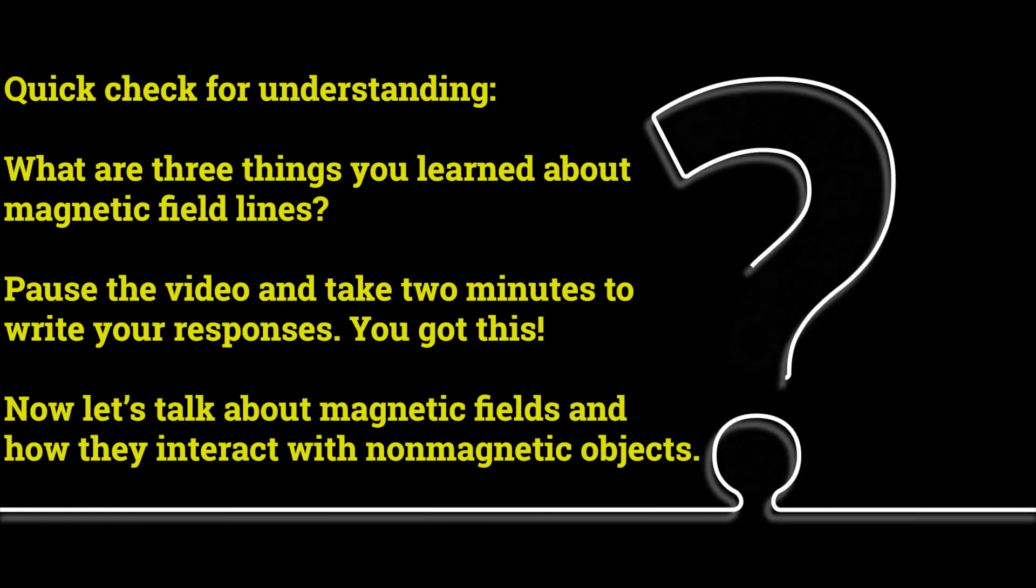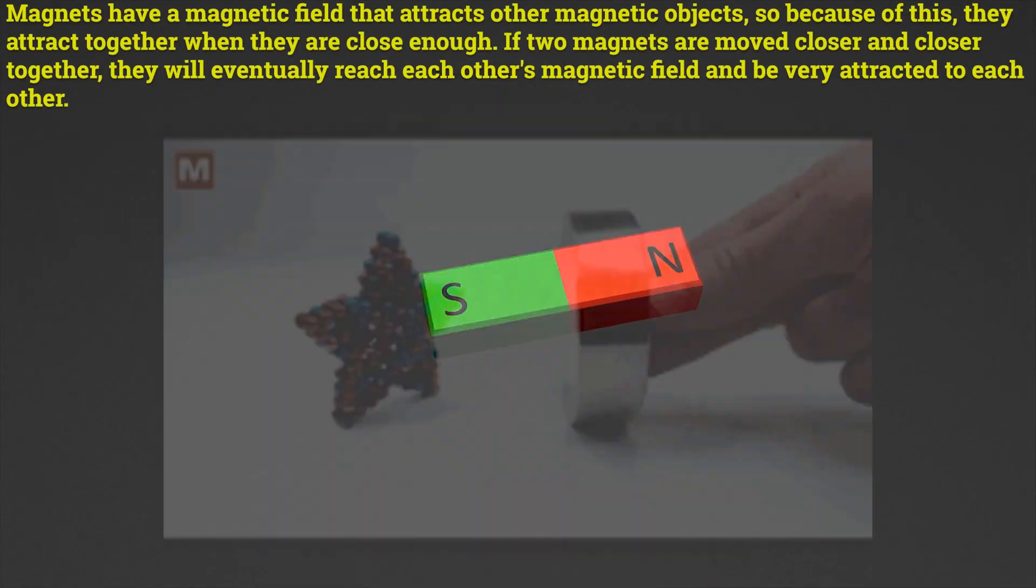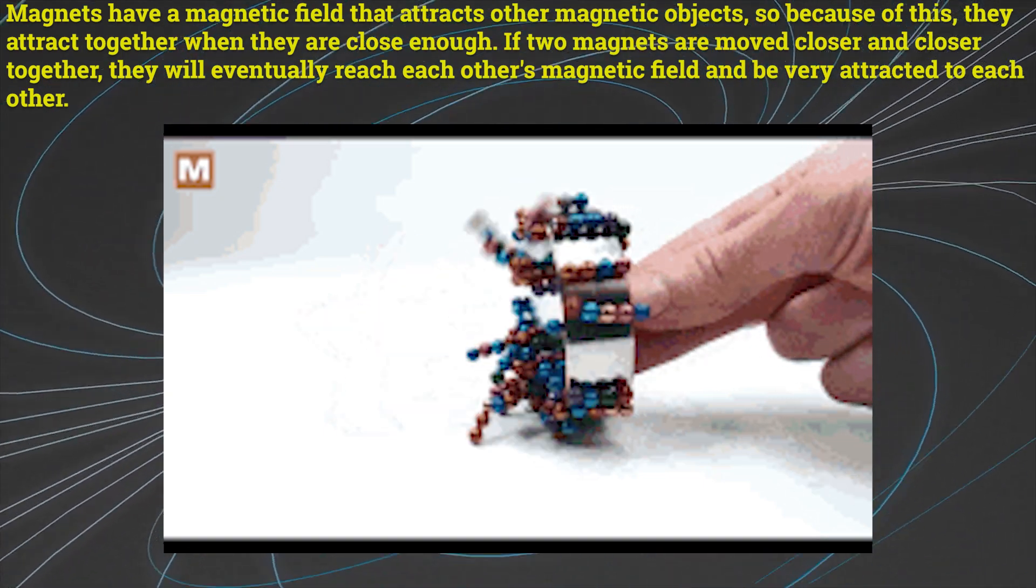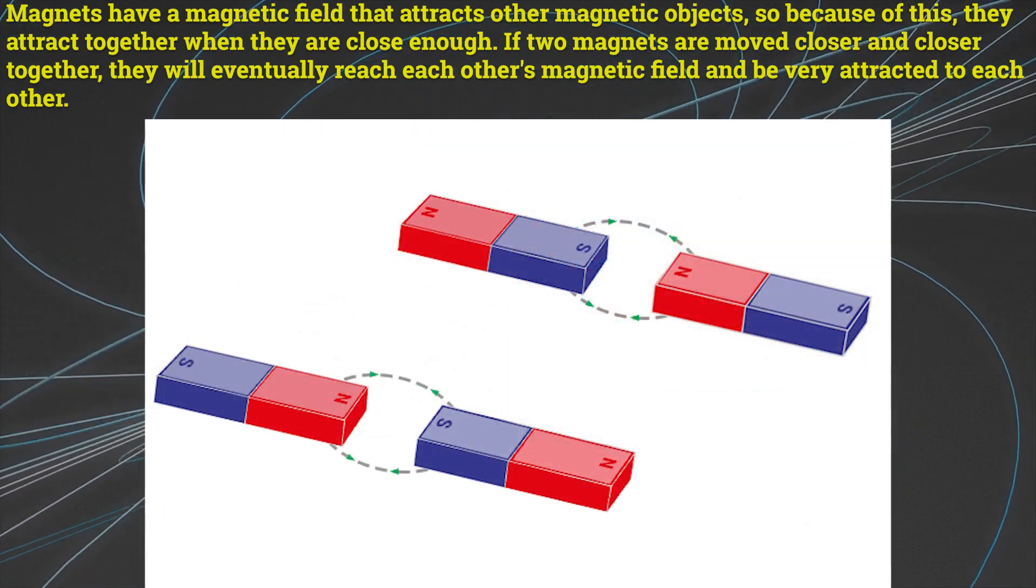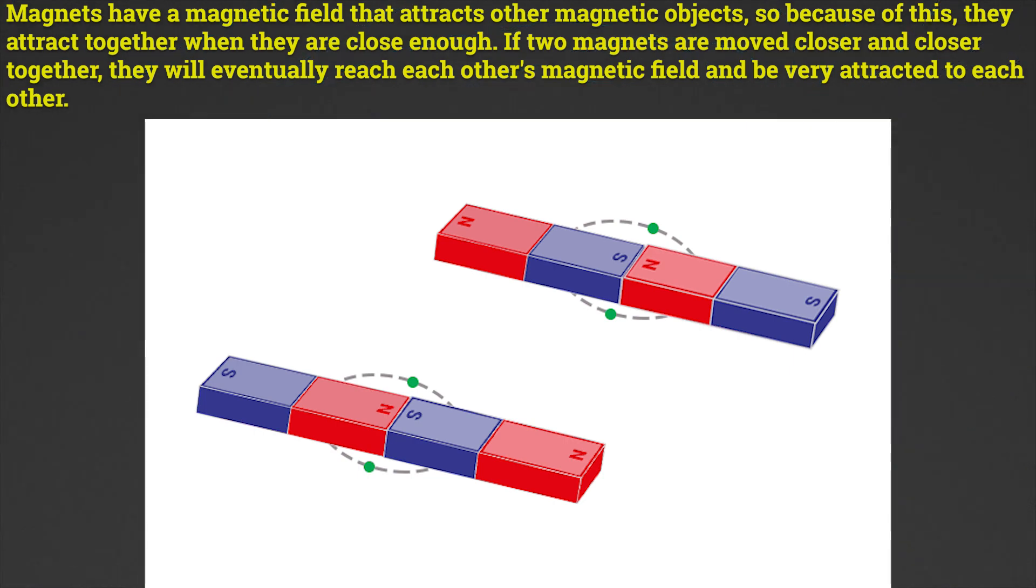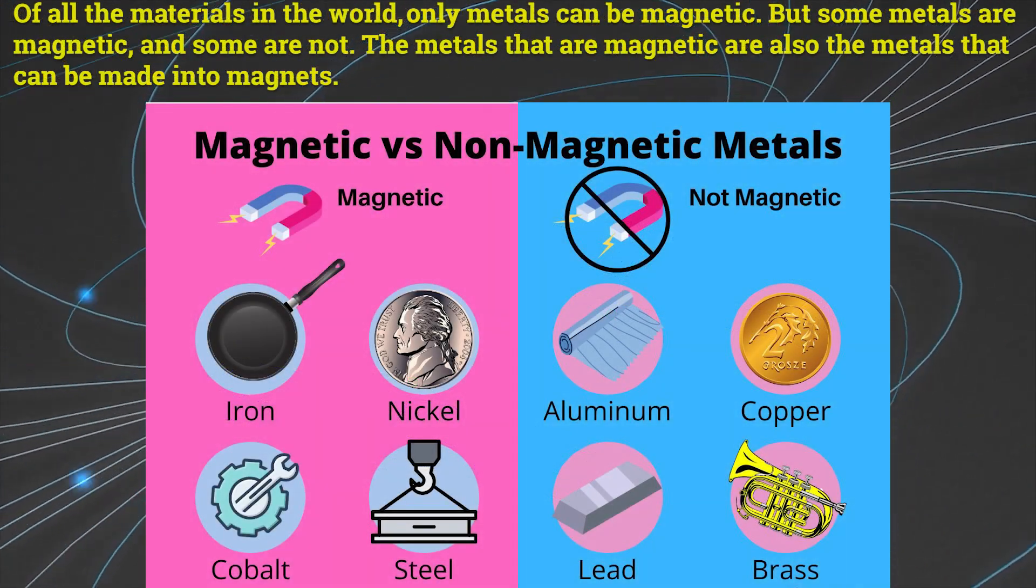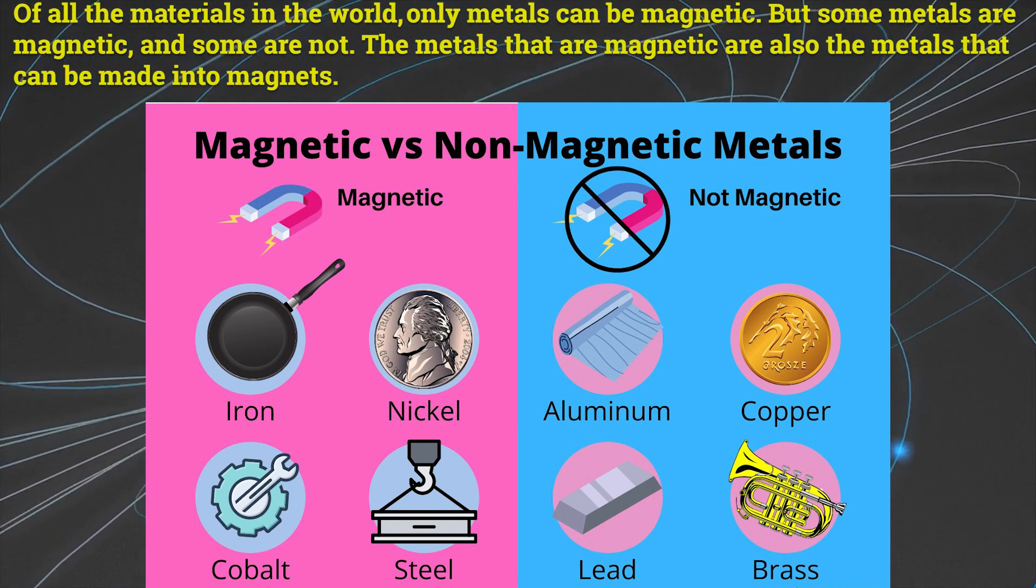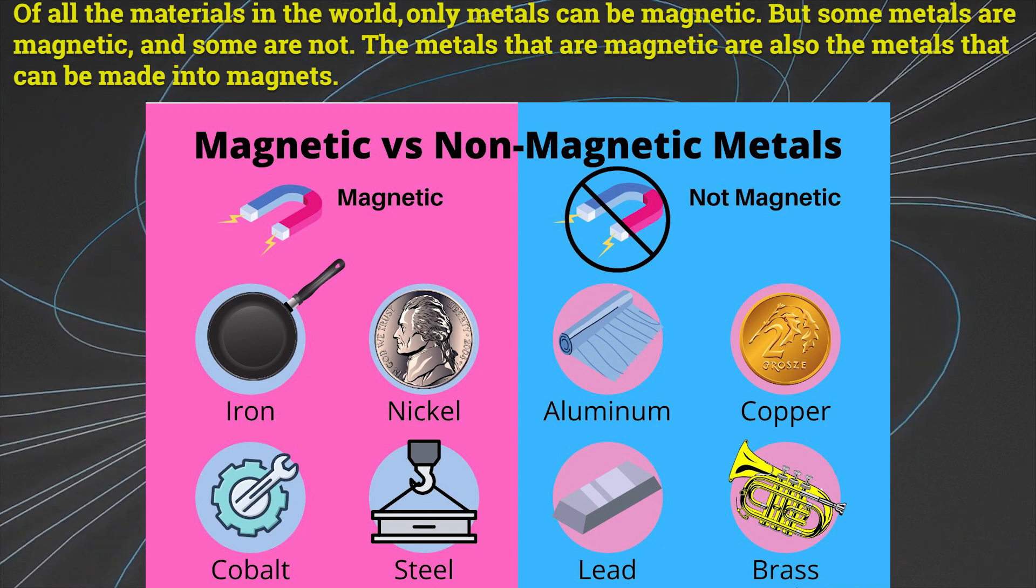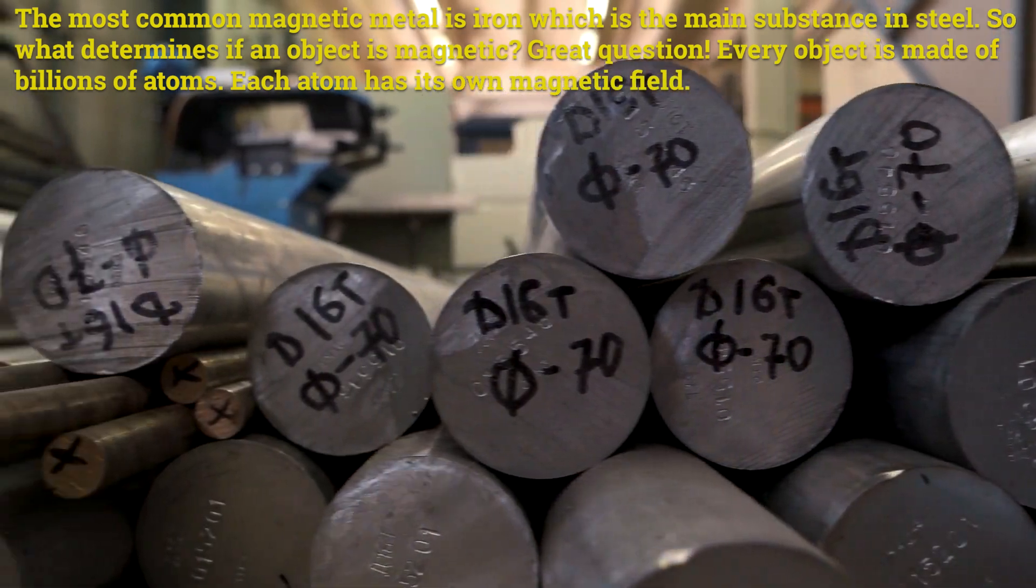Now let's talk about magnetic fields and how they interact with non-magnetic objects. Magnets have a magnetic field that attracts other magnetic objects, so because of this, they attract together when they are close enough. If two magnets are moved closer and closer together, they will eventually reach each other's magnetic field and be very attracted to each other. Of all the materials in the world, only metals can be magnetic, but some metals are magnetic and some are not. The metals that are magnetic are also the metals that can be made into magnets. The most common magnetic metal is iron, which is the main substance in steel.